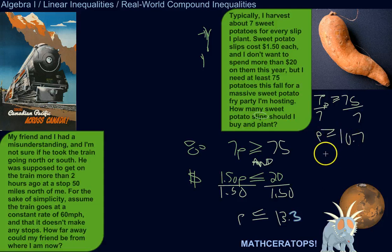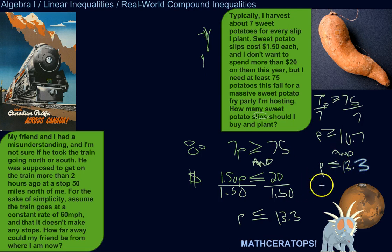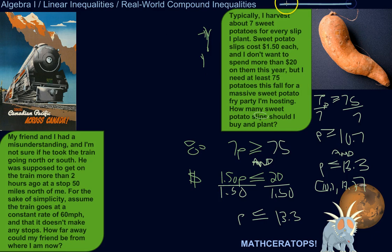So P needs to be greater than or equal to 10.7 and P needs to be less than or equal to 13.3. I could write that in interval notation as [10.7, 13.3]. I could also graph that — we have 10.7 on the left and 13.3 on the right.